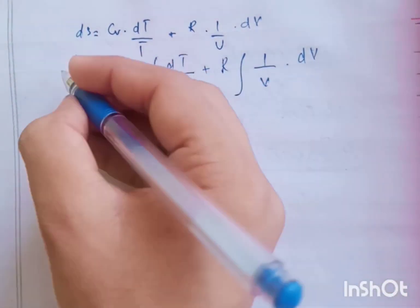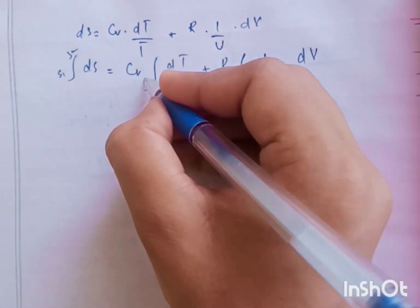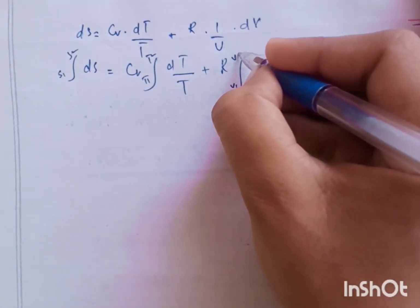DS equals to CV DT over T plus R into 1 over V dot DV. Because we supply limits here: S1, S2, T1, T2, V1, V2.